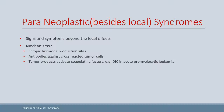Paraneoplastic syndrome refers to signs and symptoms that cannot be explained by local mechanisms or local invasion of the tumor. One mechanism is hormone secretion — for example, small cell carcinoma of the lung secretes ACTH causing Cushing syndrome, breast carcinoma secretes PTHrP (parathyroid hormone-related protein) causing hypercalcemia, and renal carcinoma may also cause hypercalcemia via PTHrP.